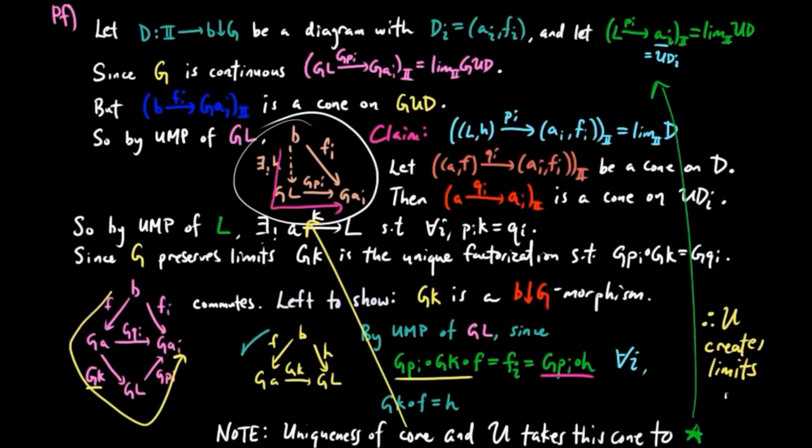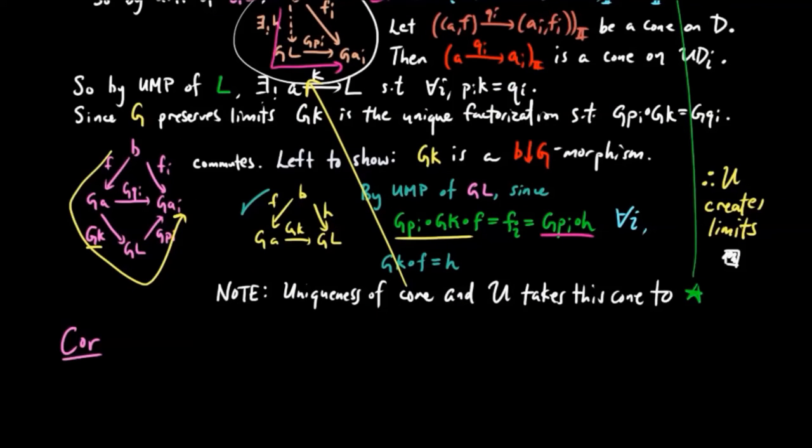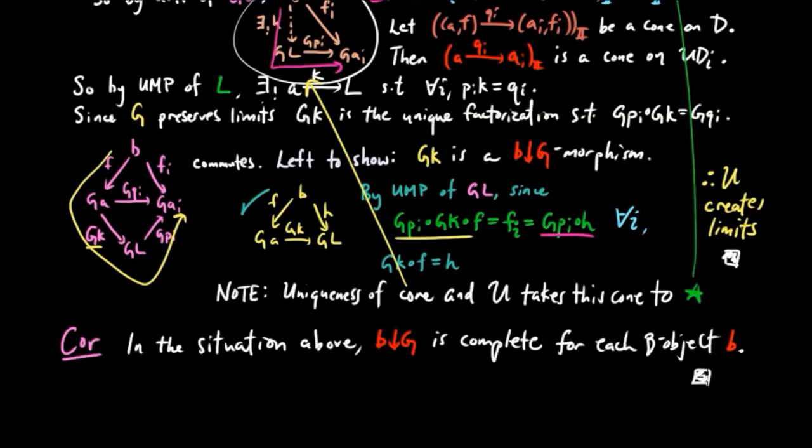As a corollary, if we assume that A is complete and G is continuous, as in the situation above, then B over G is complete for each B object B, and it is this result which will be used in the next section.